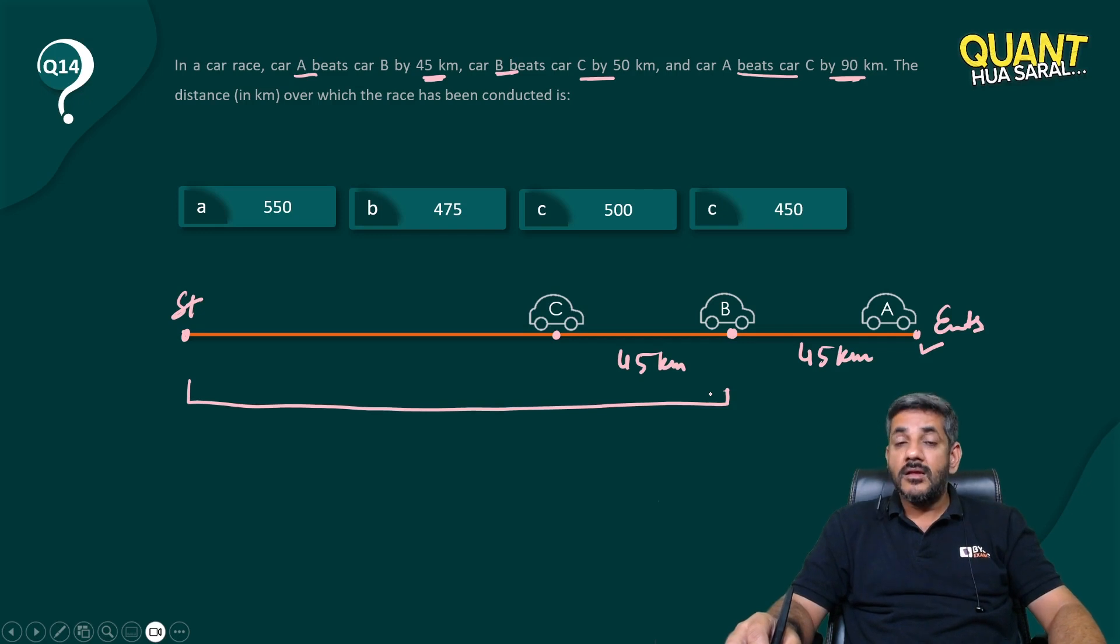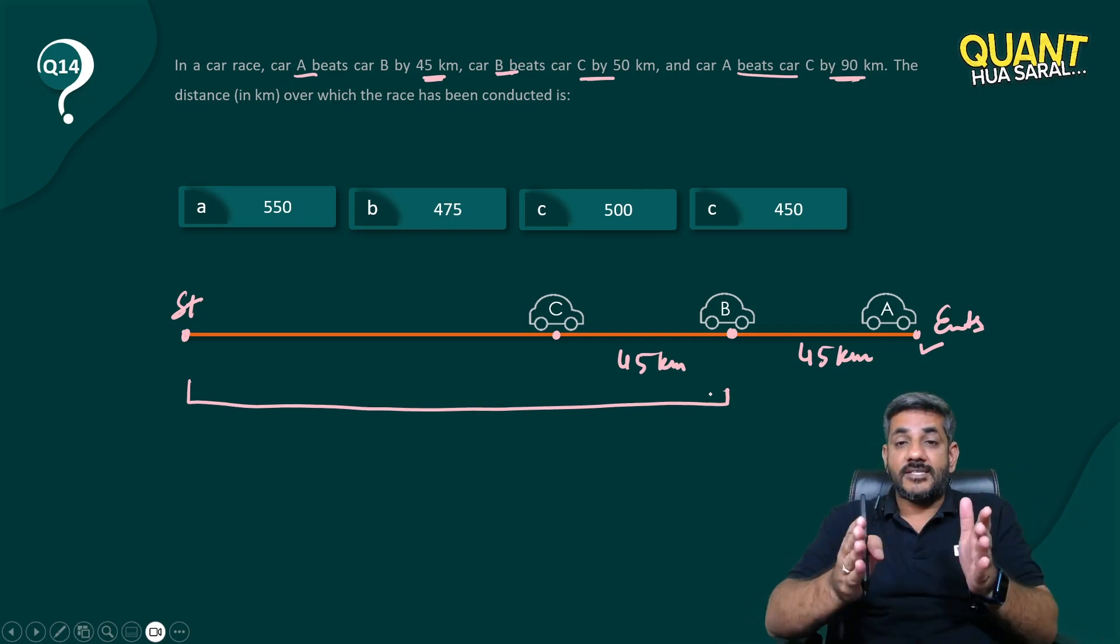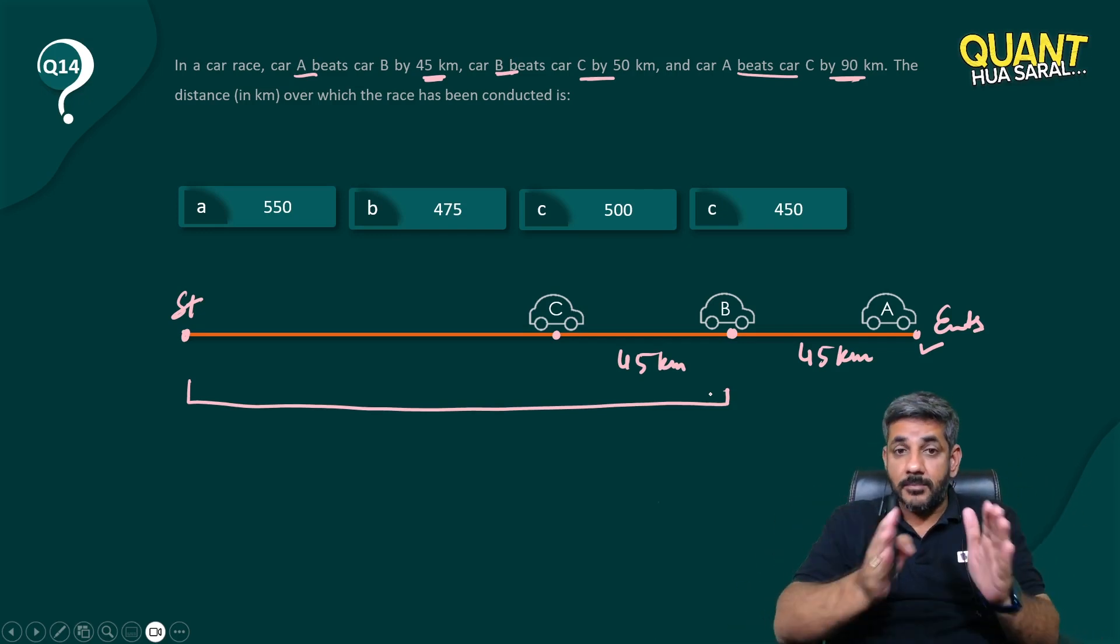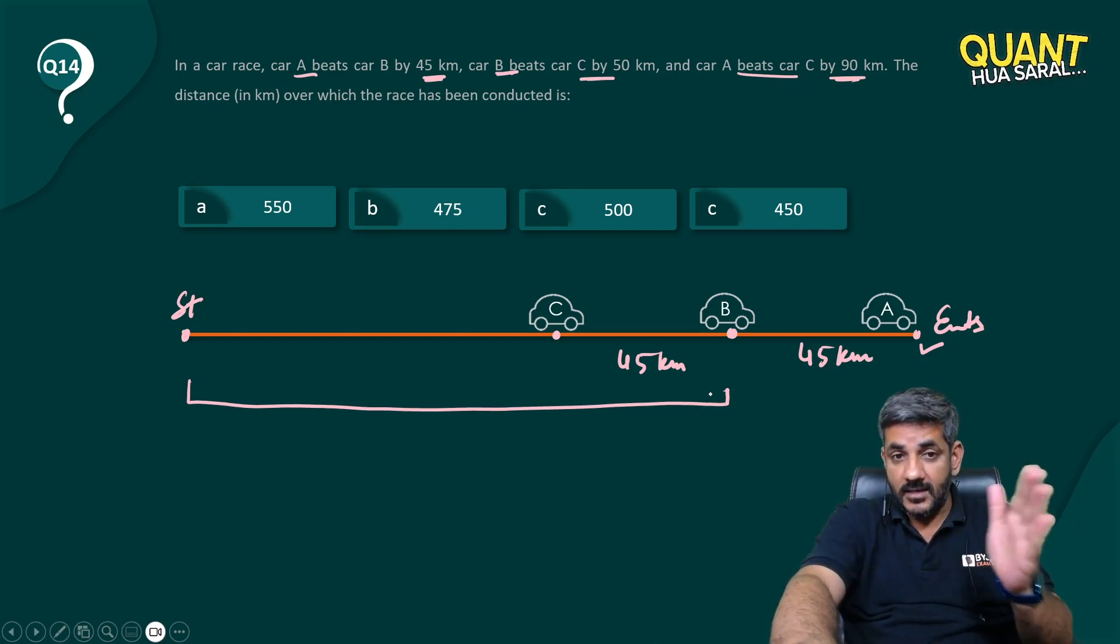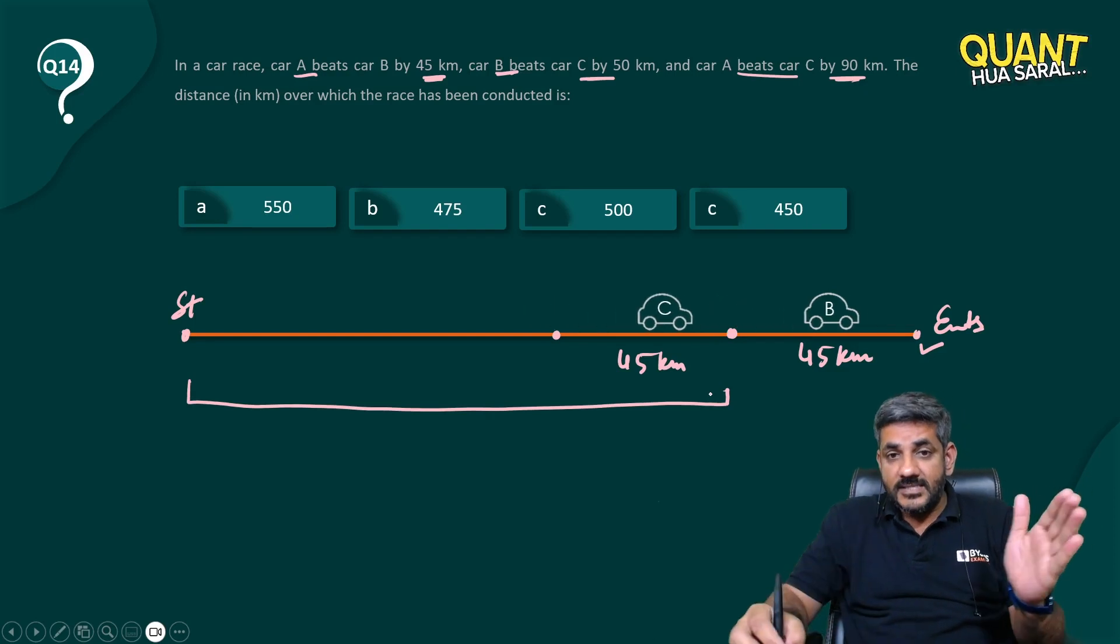Now when the race proceeds, of course A has completed the race, but B and C, they are still in the race. When the race goes further, what does happen? Look at the screen.